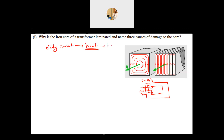We call these eddy current losses. Laminating the core means that instead of one bulk cross-section, the area is made up of stacked laminated sheets that are electrically insulated from each other. This confines the eddy currents to circulate only within each individual sheet. Since the sheets are very thin — as small as 0.5 millimeter — the eddy currents are significantly reduced, which is the purpose of lamination.